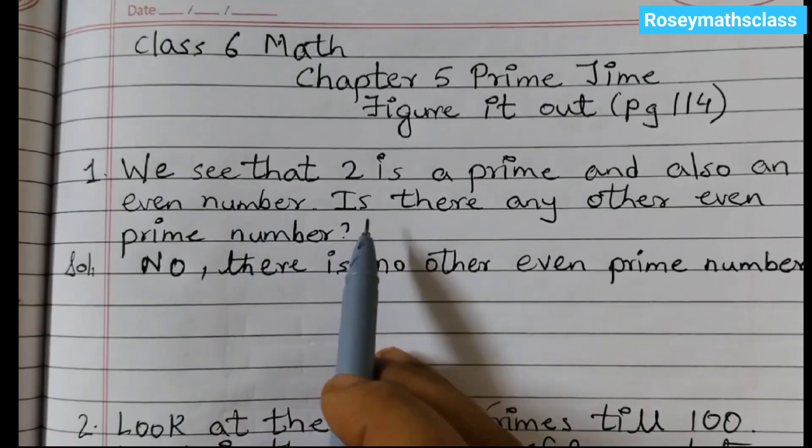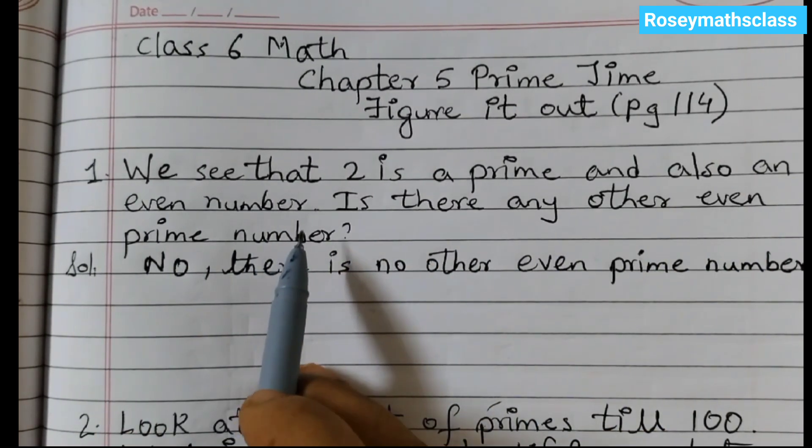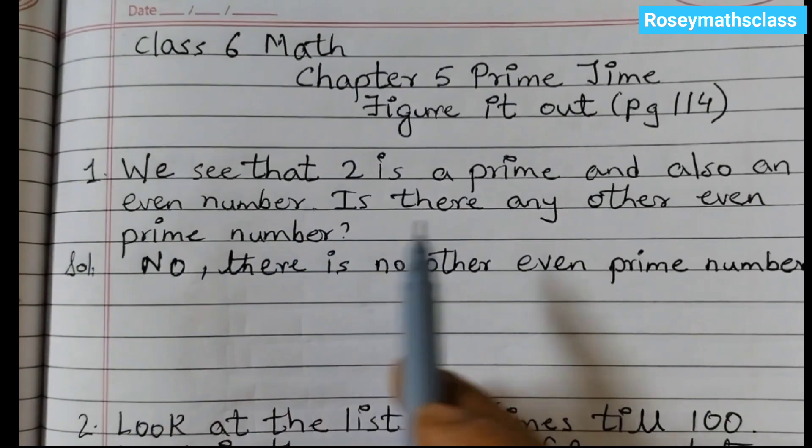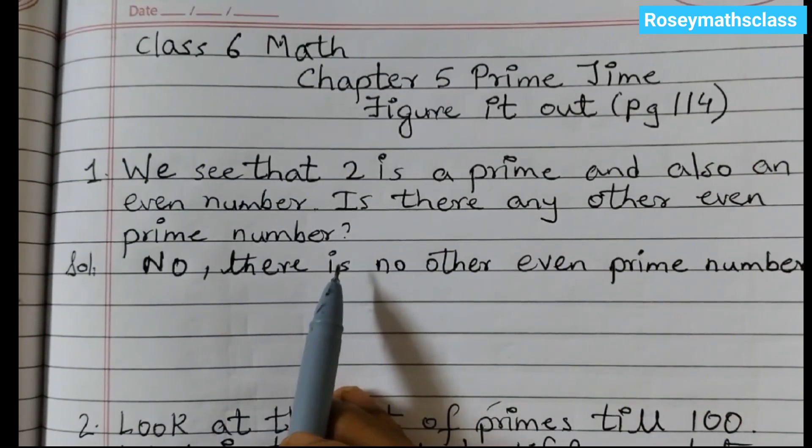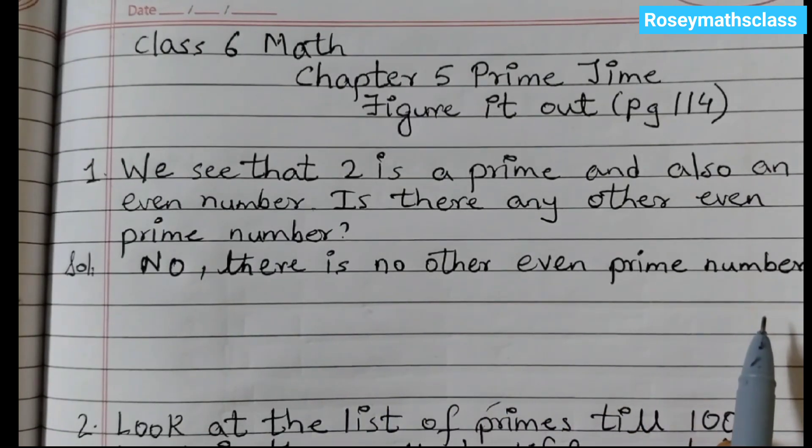We see that 2 is a prime and also an even number. We know prime numbers have exactly two factors, and even numbers are divisible by 2. Is there any other even prime number? The answer is no, there is no other even prime number.